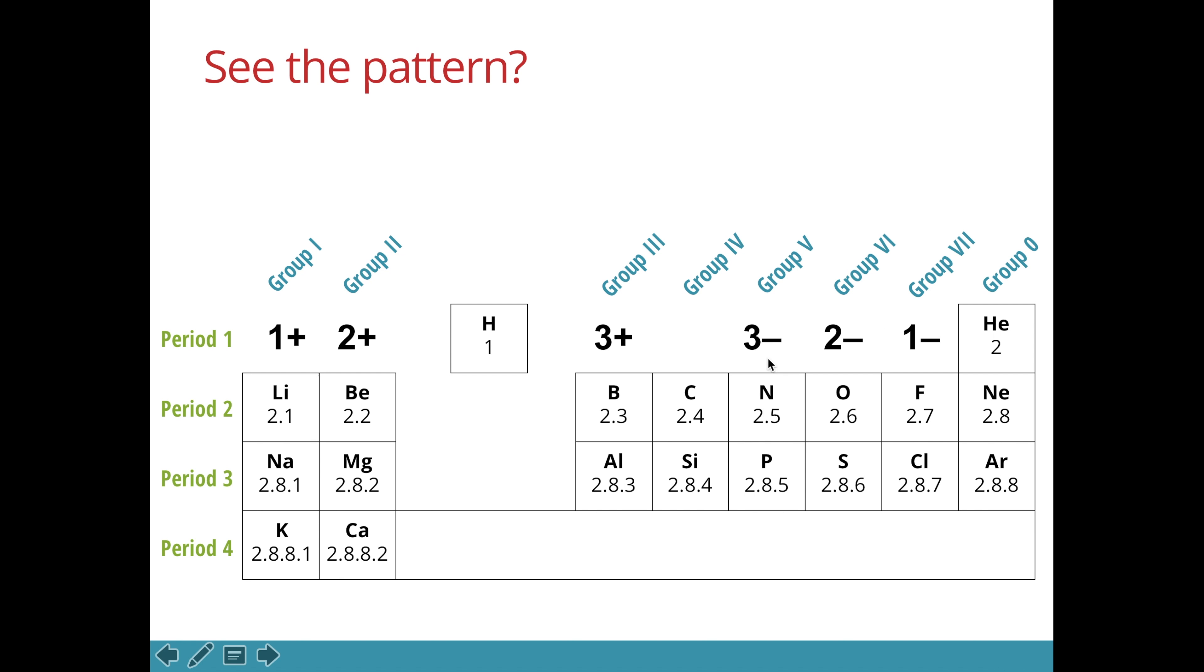On the right, we see that atoms in group 5, because they have 5 valence electrons, they gain 3 electrons to form an ion with a 3 minus charge. The same goes for elements in group 6 and 7.